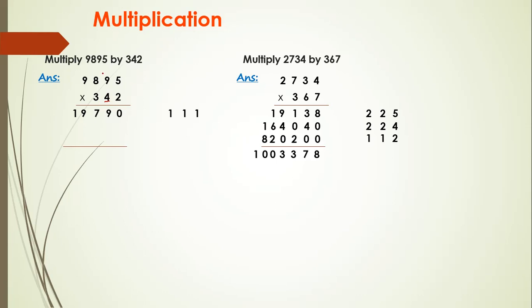We move to the next digit, that is 4. 4 is in tens place, therefore I will write 0 in ones place. Now I will start multiplying this 4 with the first number. 4×5 = 20, write 0, carry 2. 4×9 = 36, 36 plus 2 = 38, write 8 here, carry 3.